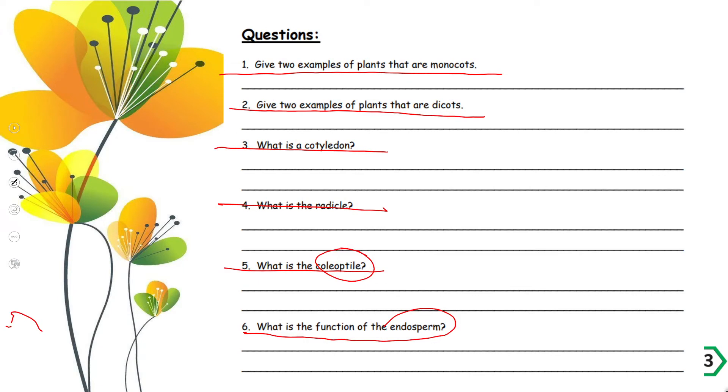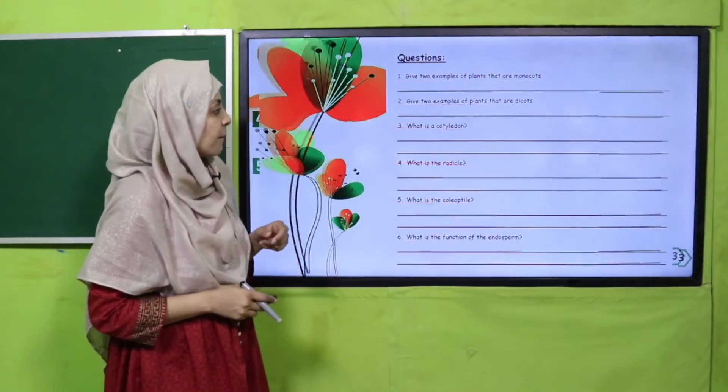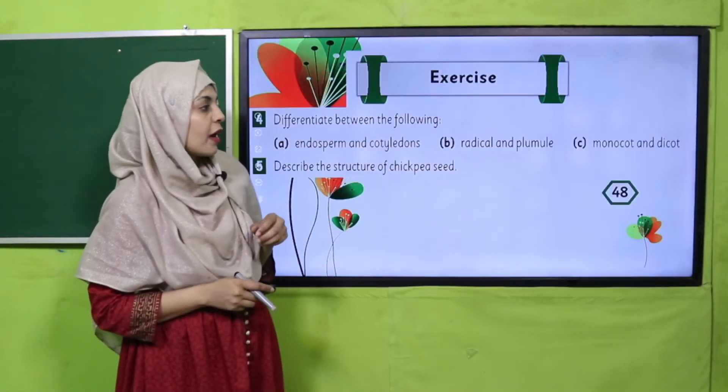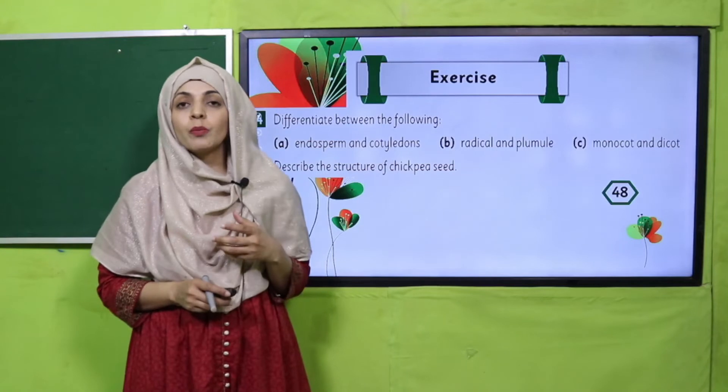Note: Coleoptile is the protective covering of the plumule which develops into the stem, and coleorhiza is the protective covering of the radicle. Please keep this in mind.